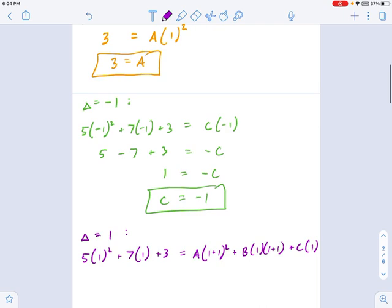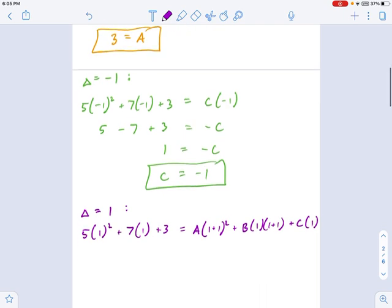Now I've plugged in delta equals 1 for everything. And there's more I can plug in here because I actually know what A is. I know that A is 3. I know that C is negative 1 because we've been doing some work up until now. So we keep on simplifying this. We get 5 plus 7 plus 3 equals 3 times 2 squared, that's 4, plus B times 1 times 2, that's going to be B times 2, plus 1 times 1 is just 1.